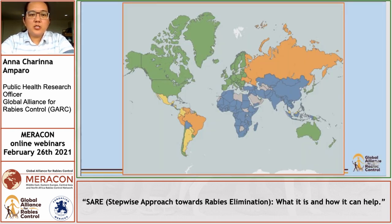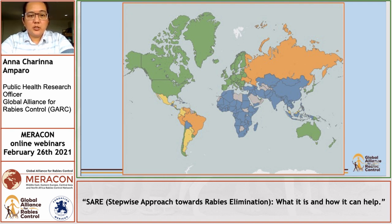I want to start with this map. This map is from WHO and it shows the endemicity of dog rabies and dog-transmitted human rabies as of 2016. The countries in blue are those that are still endemic, and as you can see, there are still a lot of countries in blue and almost all of them are in Africa and Asia.